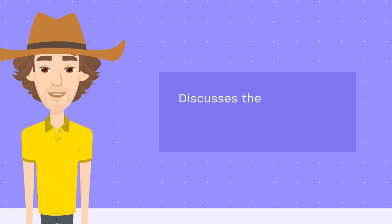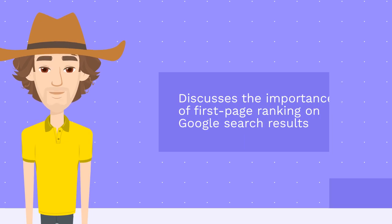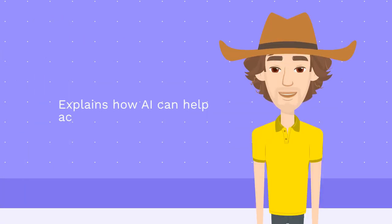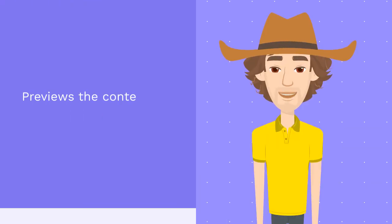Introduction: Discusses the importance of first page ranking on Google search results. Explains how AI can help achieve this goal quickly. Previews the contents of the e-book.